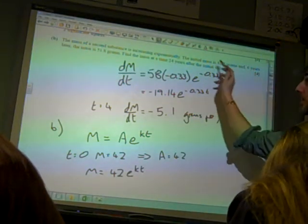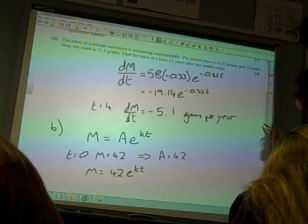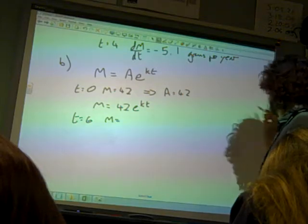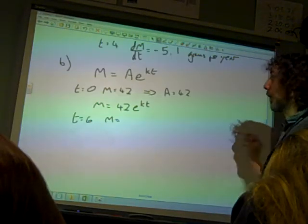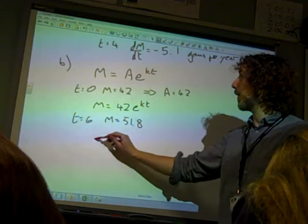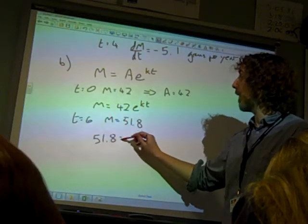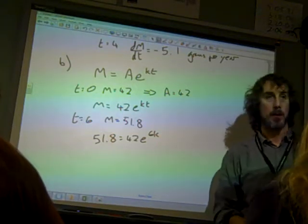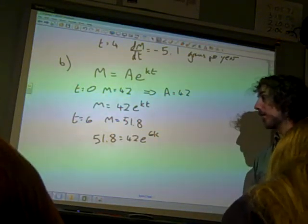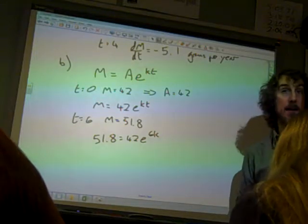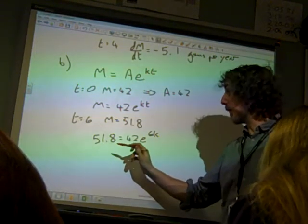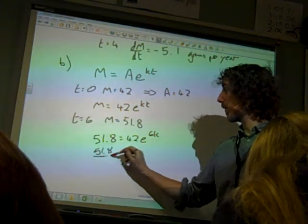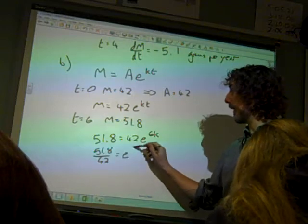We're then told that six years later the mass is 51.8. So, six years later if t equals 6, m is 51.8. So, 51.8 is 42e to the 6k. We now need to solve that equation for k, so that we know what our constant is. 51.8 over 42 is e to the 6k.